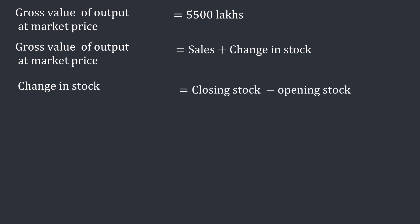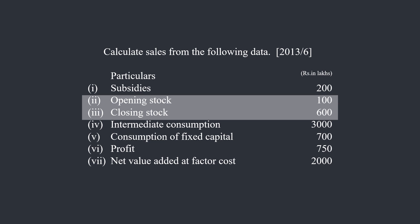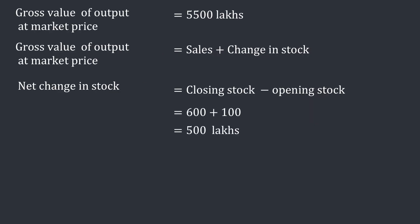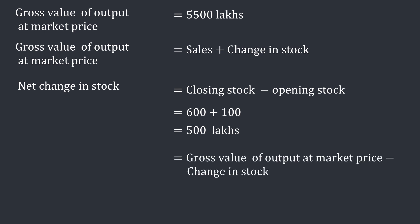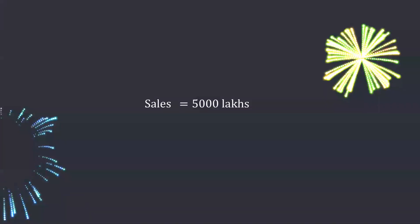Change in stock is given by closing stock minus opening stock. Closing stock is 600 lakhs and opening stock is 100 lakhs, so change in stock is 600 minus 100, which equals 500 lakhs. We subtract change in stock from gross value of output at market price to get sales: 5500 minus 500 equals 5000 lakhs. Therefore, sales is 5000 lakhs.